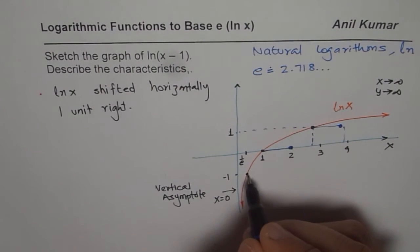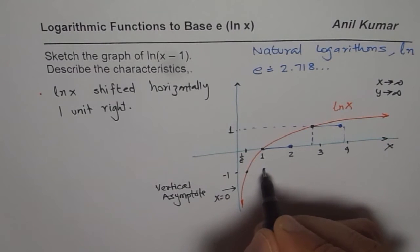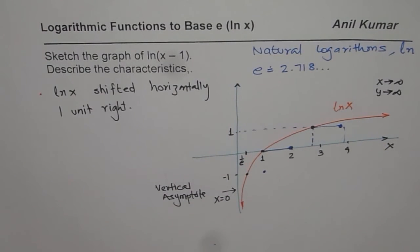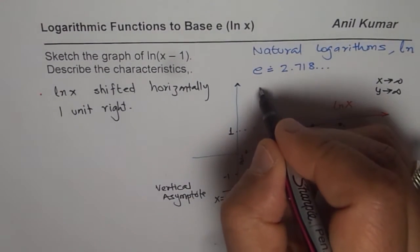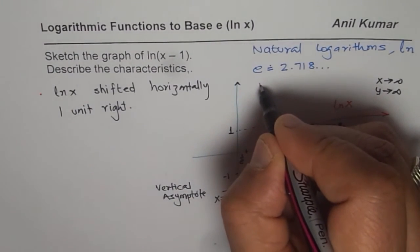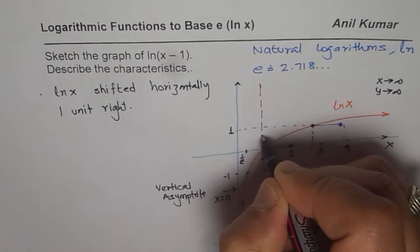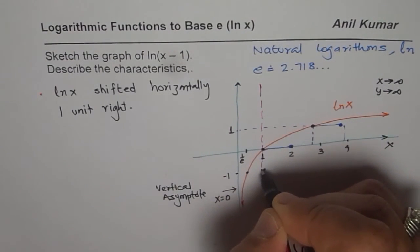This position moves closer to 4, so that goes kind of there, and this 1 over e also moves a bit more to this side. The vertical asymptote also moves a bit towards 1. So I'll move it further since these points are very close.